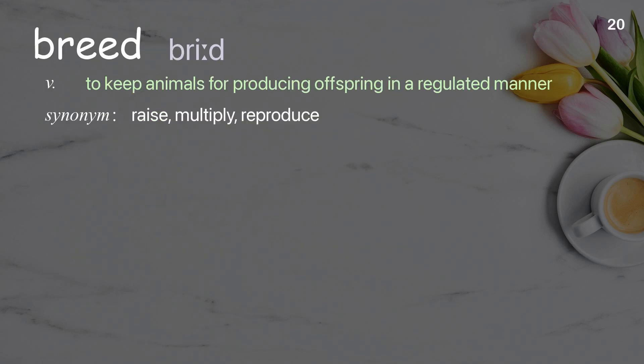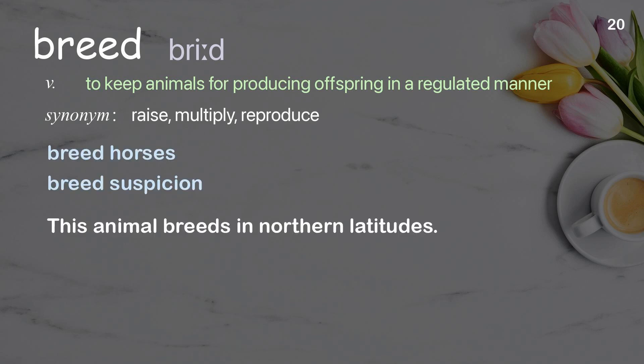Breed: to keep animals for producing offspring in a regulated manner. Examples: breed horses; breed suspicion. This animal breeds in northern latitudes.